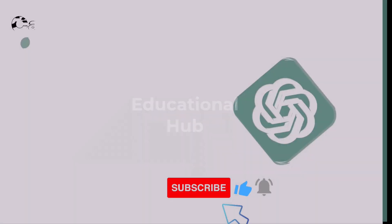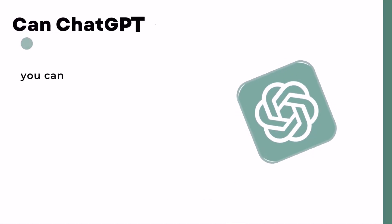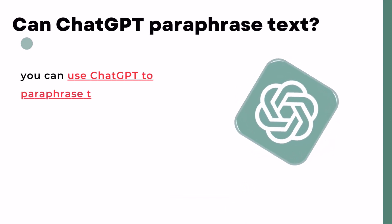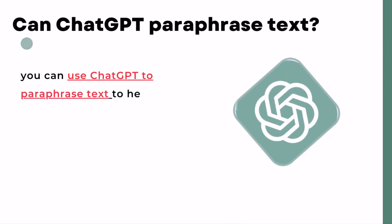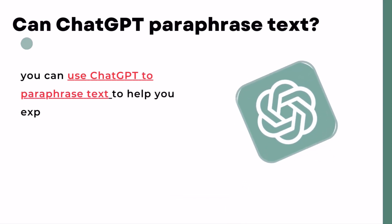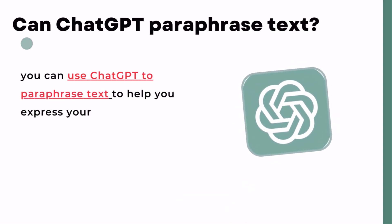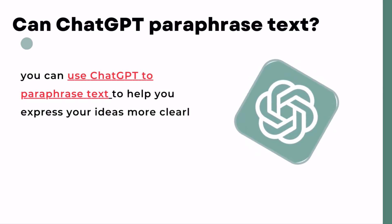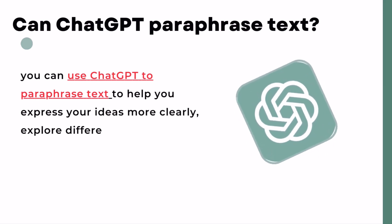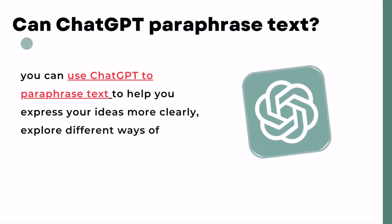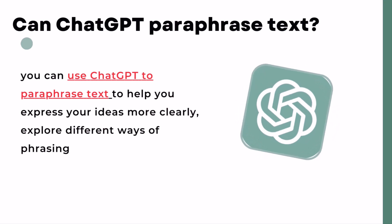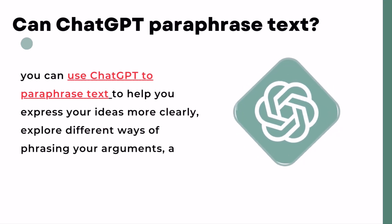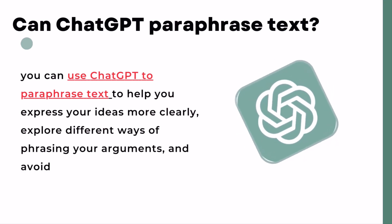The second question is: can ChatGPT paraphrase text? The answer is yes — you can use ChatGPT to paraphrase text to help you express your ideas more clearly, explore different ways of phrasing your arguments, and avoid repetition.